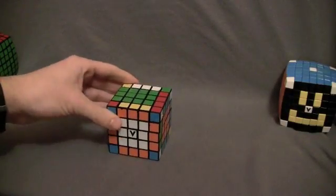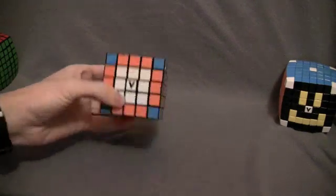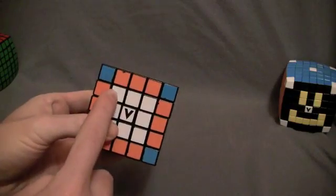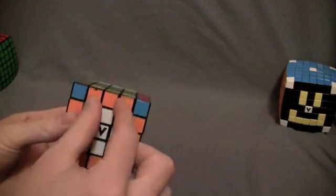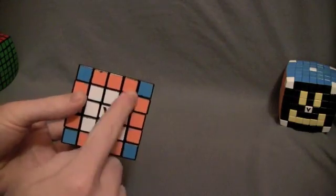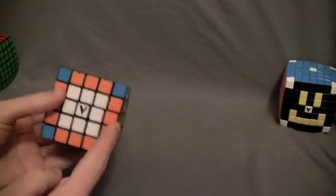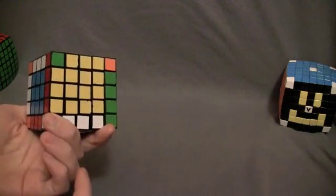In the method that I'm going to teach you, there are three main steps. The first step is pairing up all of the center pieces so they look like they do right now. And then, pairing up all the edge pieces like they look right now.